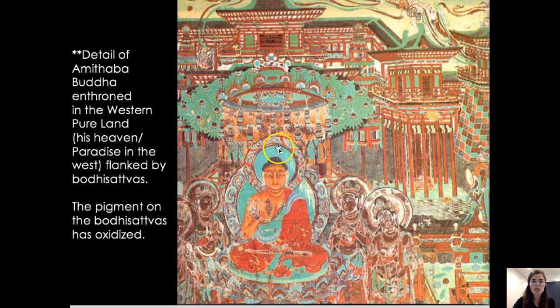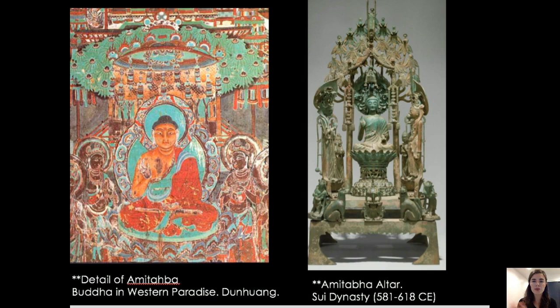Here's the Amitabha Buddha. You can see an allusion to the Bodhi tree and the bodhisattvas around — the pigment on the bodhisattvas has oxidized, so their skin appears dark, but that was not intended. We see the Amitabha Buddha enthroned in the Western Pure Land, essentially his heaven or paradise in the West, flanked by those bodhisattvas — enlightened beings who have chosen to stay behind to help people attain nirvana. Comparing the two Amitabha Buddhas: the Tang dynasty version is much fuller and fleshier with telltale rings around the neck, versus the thinner, more delicate Amitabha from the Sui dynasty. The Tang style will become very popular internationally — adopted in Korea and then also in Japan.